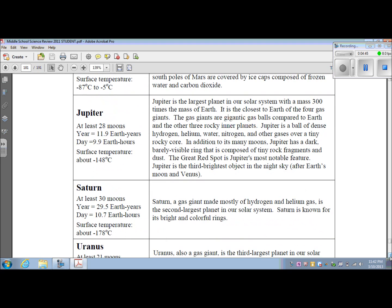The next planet is Jupiter. It has at least 28 moons, although we know that typically it has more than that. Its year is 11.9 Earth years. Its day is 9.9 Earth hours. Its surface temperature is about negative 148 degrees Celsius. Jupiter is the largest planet in our solar system with a mass 300 times the mass of Earth. It is the closest to Earth of the four gas giants. The gas giants are gigantic gas balls compared to Earth and the other three rocky inner planets. Jupiter is a ball of dense hydrogen, helium, water, nitrogen, and other gases over a tiny rocky core.